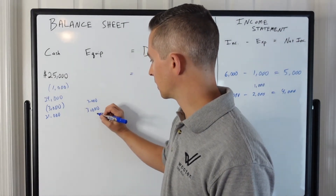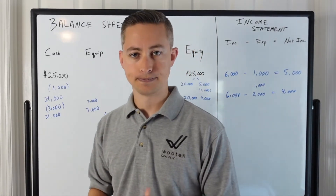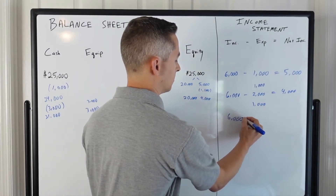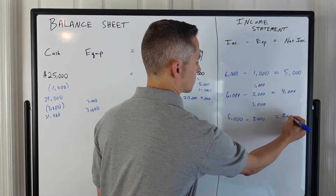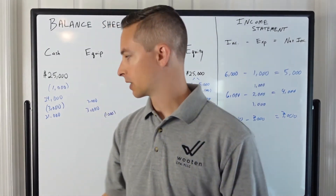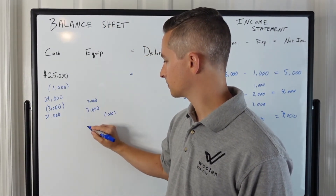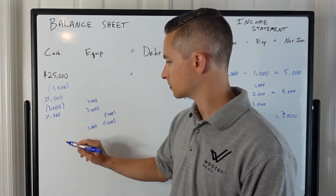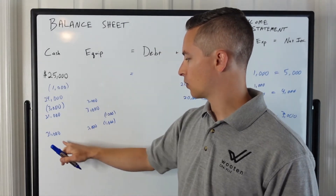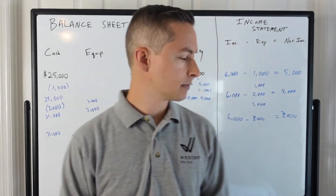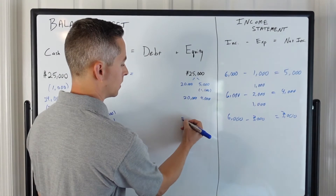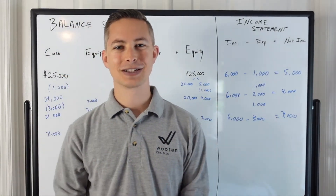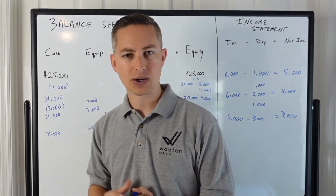Using straight-line depreciation — expensing evenly over the useful life — that's $1,000 per year. Each year we record $1,000 of accumulated depreciation and $1,000 of depreciation expense. So we have $6,000 of income minus $3,000 of expenses, equaling $3,000 of net income. On the balance sheet, the $3,000 asset is reduced by $1,000 of accumulated depreciation down to $2,000. Cash is still $21,000, and equity is $23,000 — everything stays in balance.